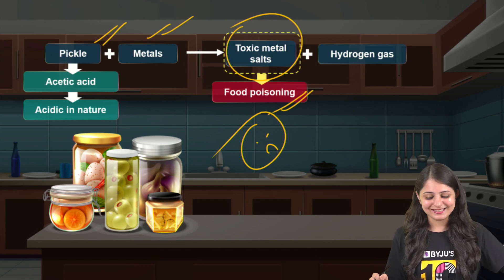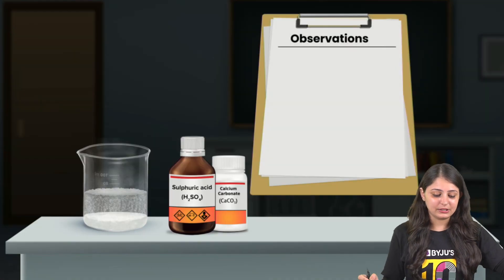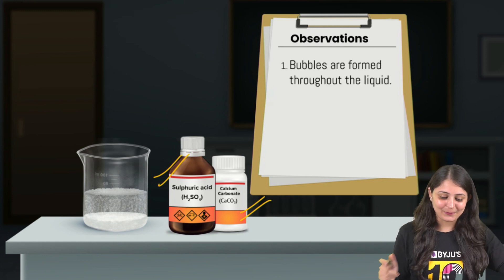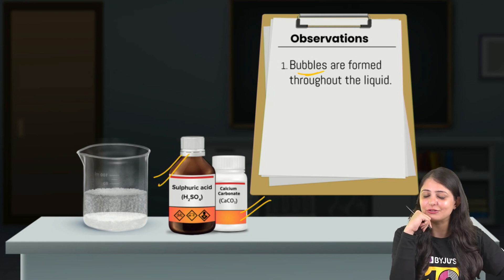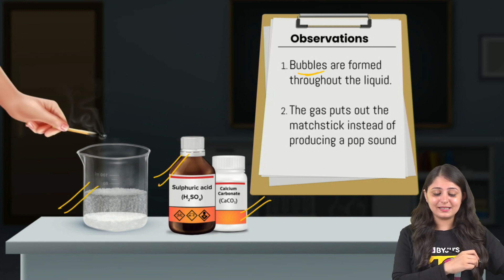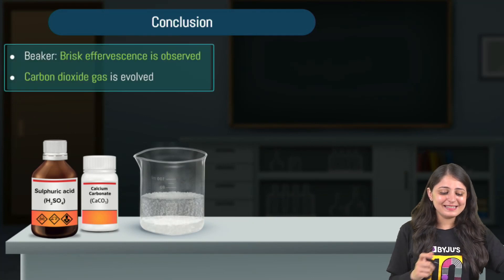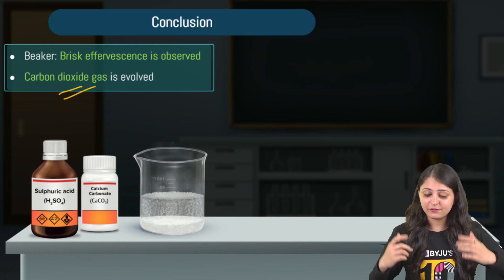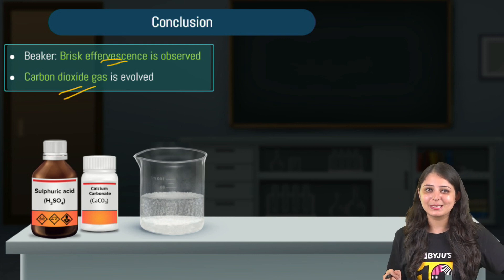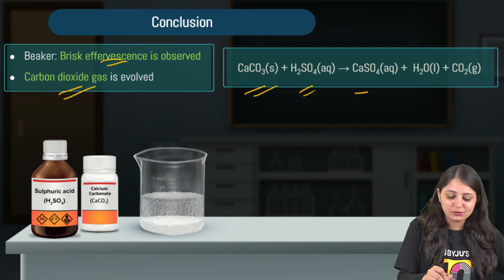Moving on to the reaction of acid with metal carbonate — here we have calcium carbonate reacting with sulfuric acid. Observation one: bubbles are being formed. Observation two: the gas is extinguishing the matchstick, so no pop sound — this is not hydrogen. This gas is actually carbon dioxide. Brisk effervescence means the rapid and vigorous evolution of bubbles with a fizzing sound. The products are calcium sulfate, water, and carbon dioxide.